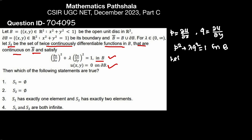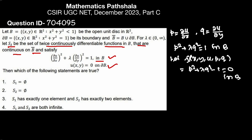Let a function F(x,y,u,p,q) = p² + λq² − 1, so it equals 0 in B. Now we will use the Charpit auxiliary equations.